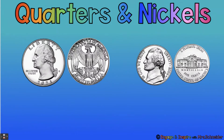Also, look — George Washington kind of has a curl right here. You see that? That's different. Let's also remember that the quarter has ridges on the edge — it's bumpy around the edges — and the nickel is smooth around the edges. The quarter is bigger in size and in value. So the quarter is worth 25 cents, and the nickel is only worth 5 cents.